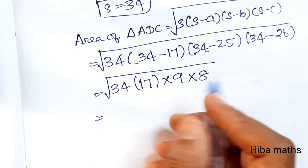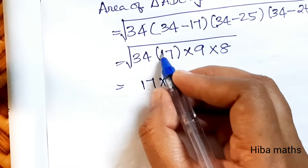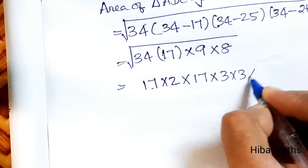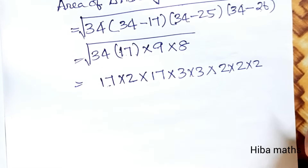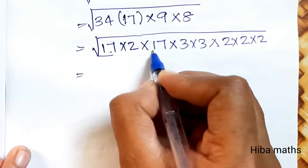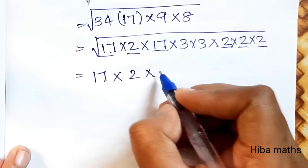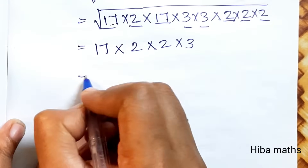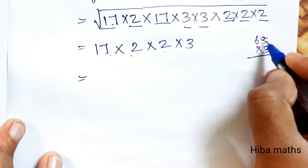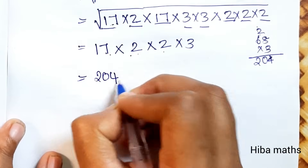So Area = √(34 × 17 × 9 × 8). Using prime factorization: 34 × 17 = 578, and 9 × 8 = 72, giving 34 × 17 × 9 × 8 = 41616. Simplifying: 2 × 17 × 17 × 9 × 8 = 4 × 17² × 9 × 2 = giving √(41616) = 204. Area of triangle ADC = 204 m².